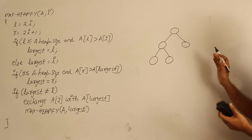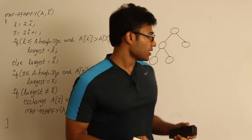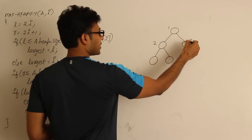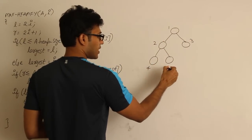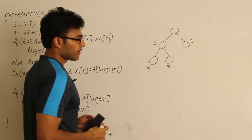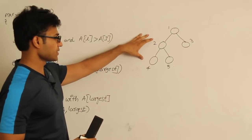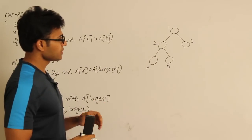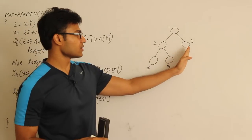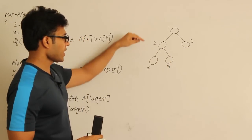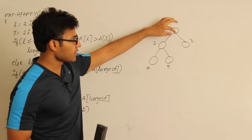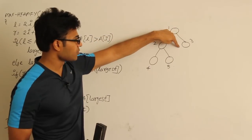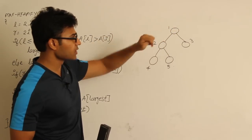Consider an almost complete binary tree with indices 1 through 5. I want to know where the leaves start. With n = 5, the leaves run from floor(n/2) + 1 to n, which is 3 to 5. So indices 3, 4, and 5 are leaves. If we add a sixth node, index 2 is no longer a leaf; leaves are now 4, 5, and 6.